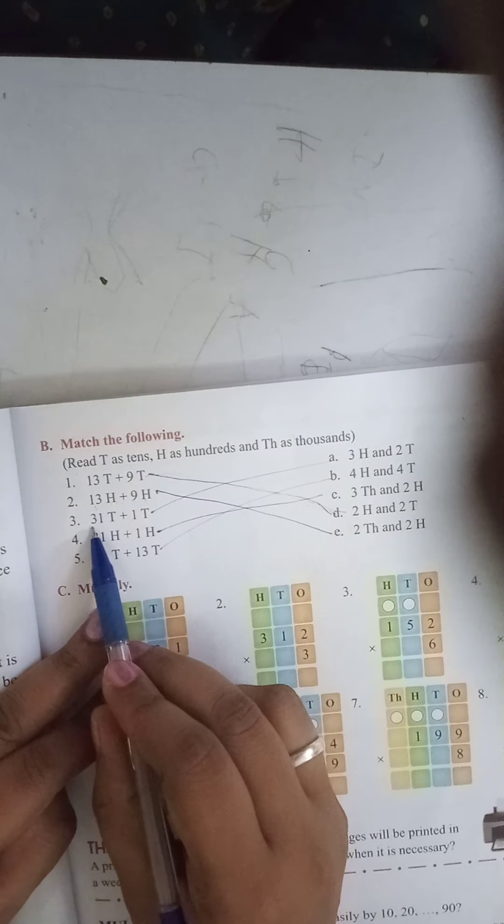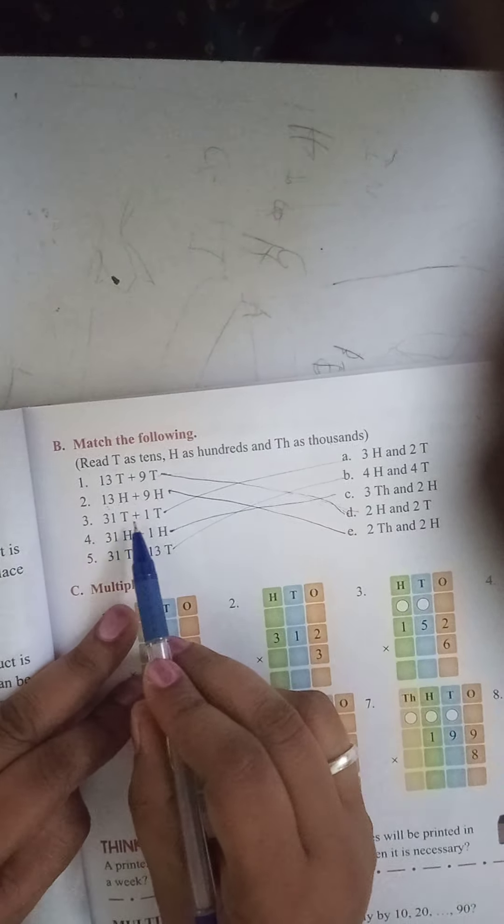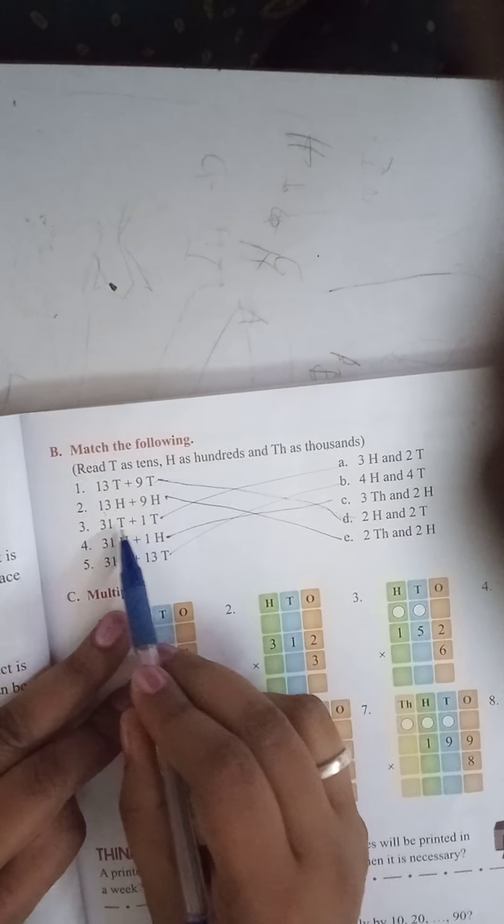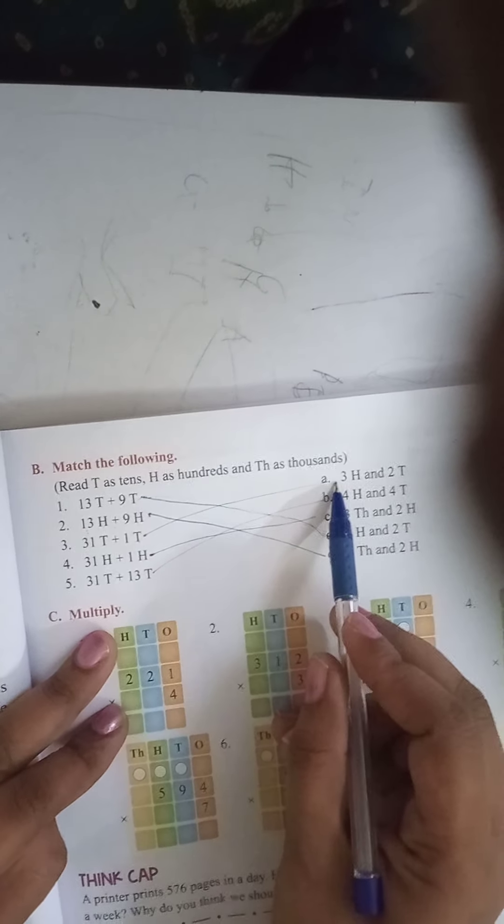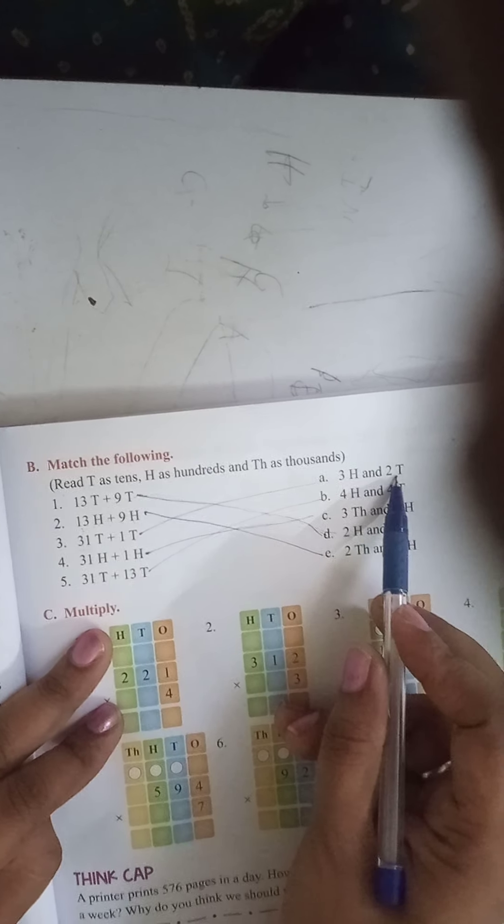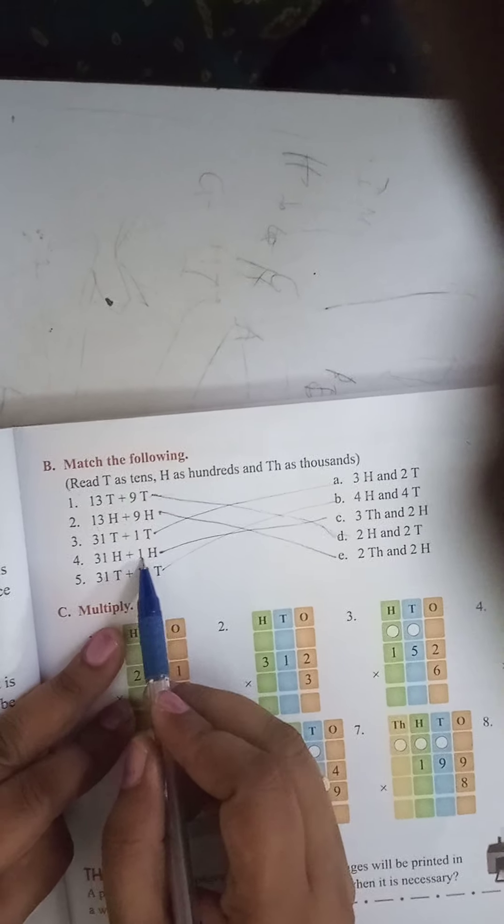Third one is 31 tens plus 1 tens. 31 plus 1, 32. 32 tens. The answer will be 320.